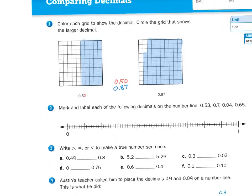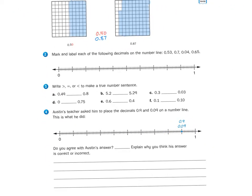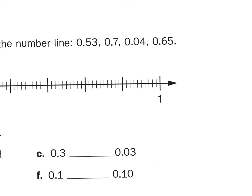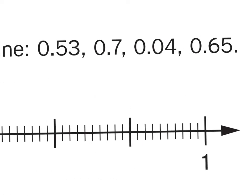Now, number 2 has a number line. It says, mark and label each of the following decimals on the number line: 0.53, 0.7, 0.04, and 0.65. Now, again, we have a decimal amount that is missing a place value, and that's 0.7.